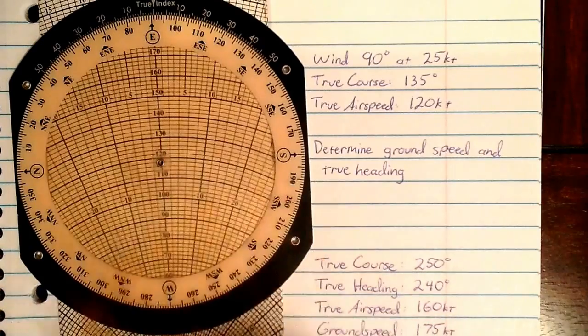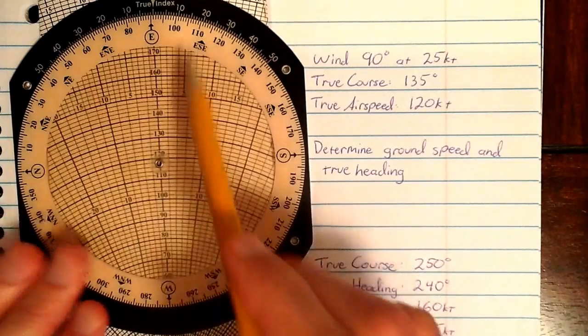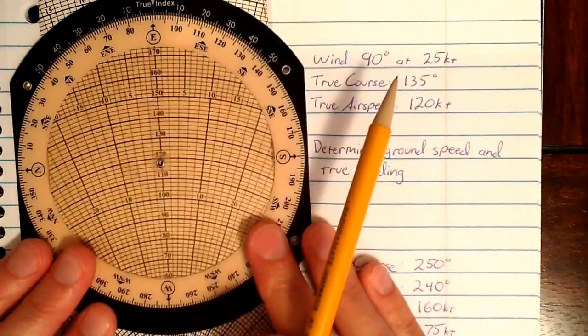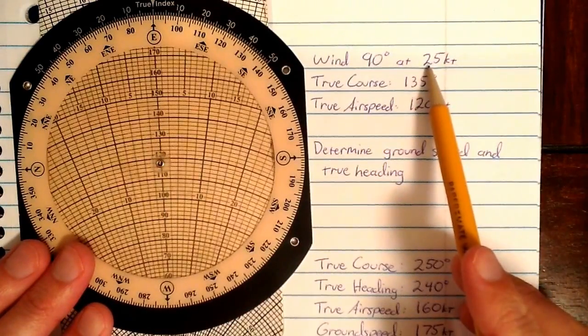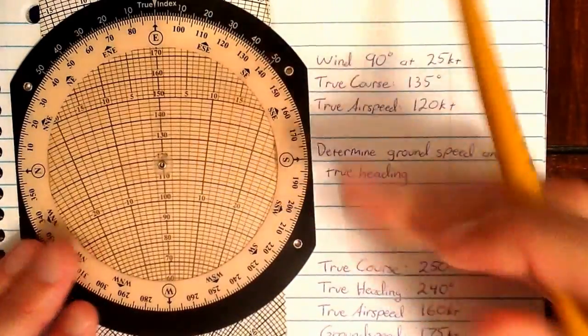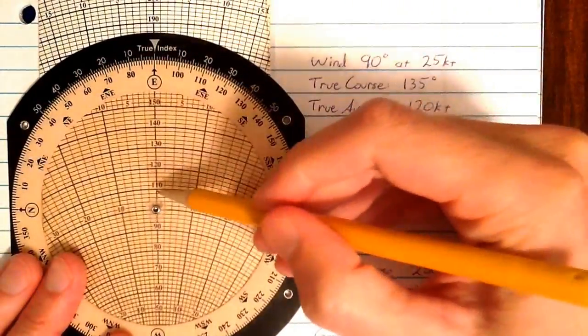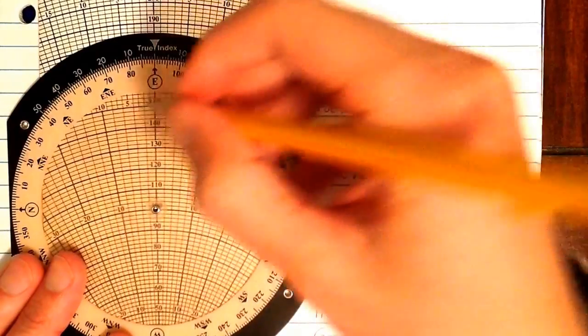Let's configure the flight computer in wind mode. So we're going to set wind direction at the top as 90 degrees, and then we're going to set a wind dot up from the grommet at 25 knots. Now for ease of measuring up from the grommet, I'm going to set the grommet at 100, so I can count 10, 20, 5 knots.